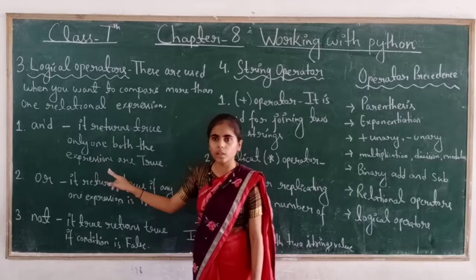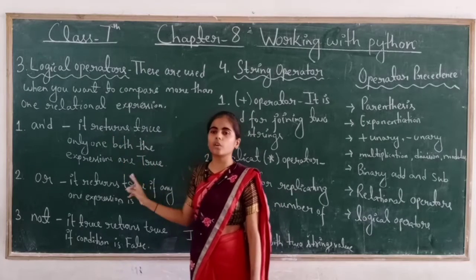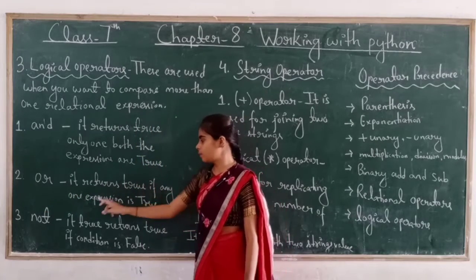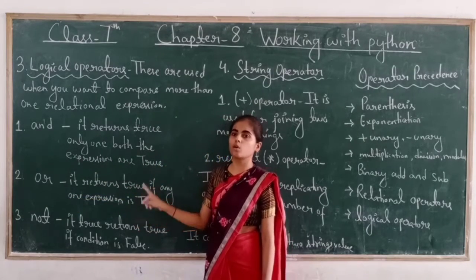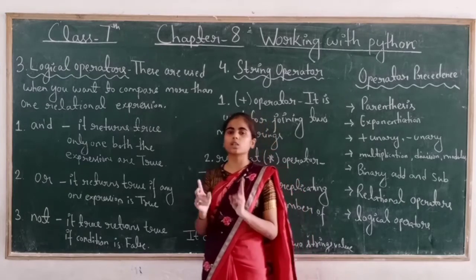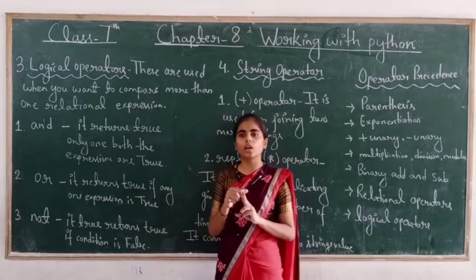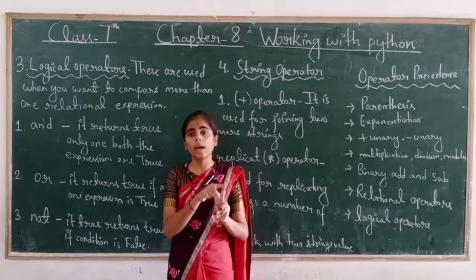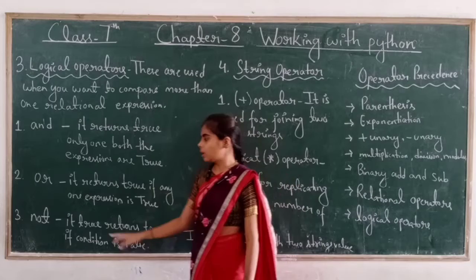If any one of the two expressions is false in AND, the result will be false. For true result with AND, both expressions must be true. The OR operator returns true if any one expression is true. If one value is true and the other is false, the result from OR is still true. At least one of the values must be true. In AND, both must be true for a true result, but if any one is false, the result is false.